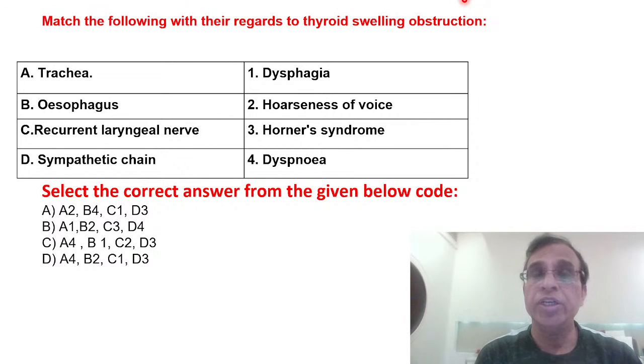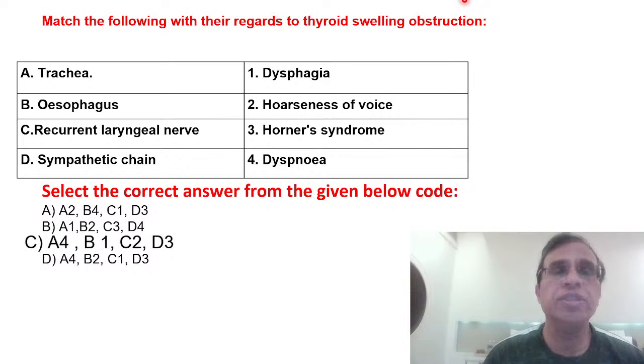If sympathetic chain is involved, as we discussed in class when discussing nasopharyngeal carcinoma, it may involve 9th, 10th, 11th, 12th nerve or sympathetic chain. The sympathetic chain involvement causes Horner syndrome. It was a very simple question.